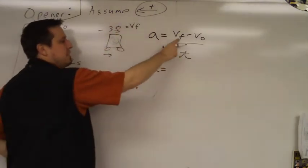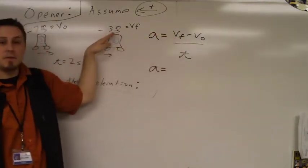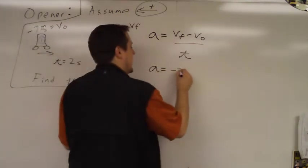Now substituting in for V final, this means substitution, right? If this was an X, and I said X equals negative 3, what would you put in for X? Negative 3. So you write it, negative 3.